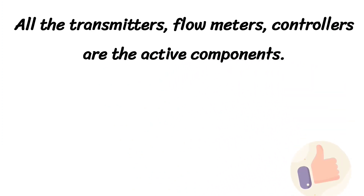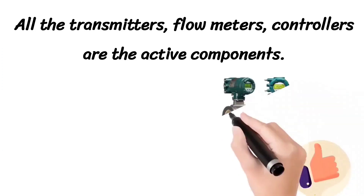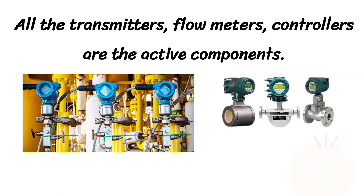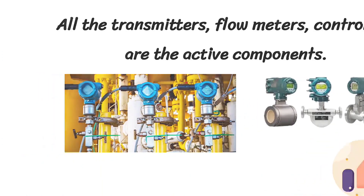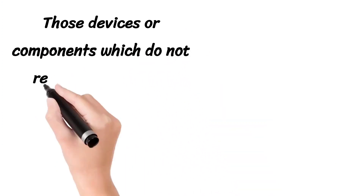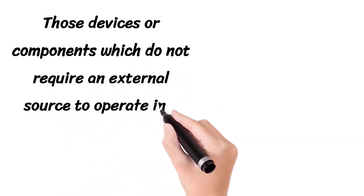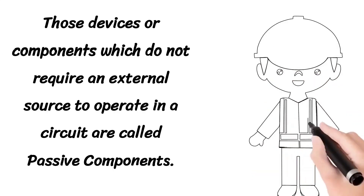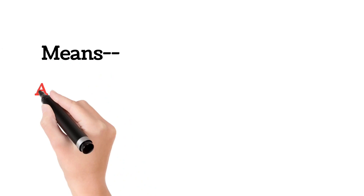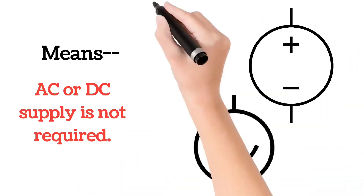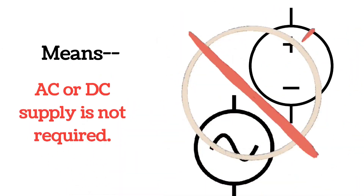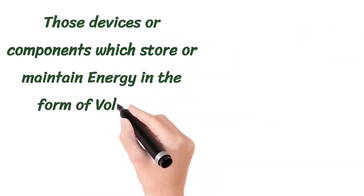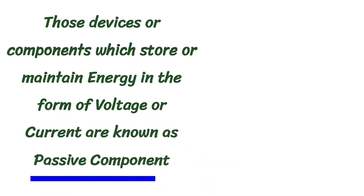Transmitters, flow meters, and controllers are active components. Devices or components that do not require an external supply source to operate are called passive components — meaning AC or DC supply is not given to them. Devices or components that store energy in the form of voltage or current are called passive components.